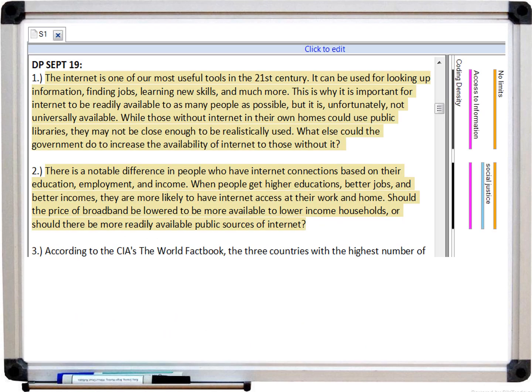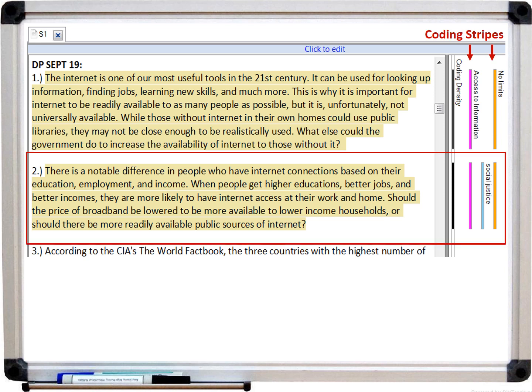It opens the source and highlights the passages of text that I coded at no limits to access to information. And if I turn the coding stripes feature on, I can also see that some of those passages of text were coded at other nodes, such as social justice.